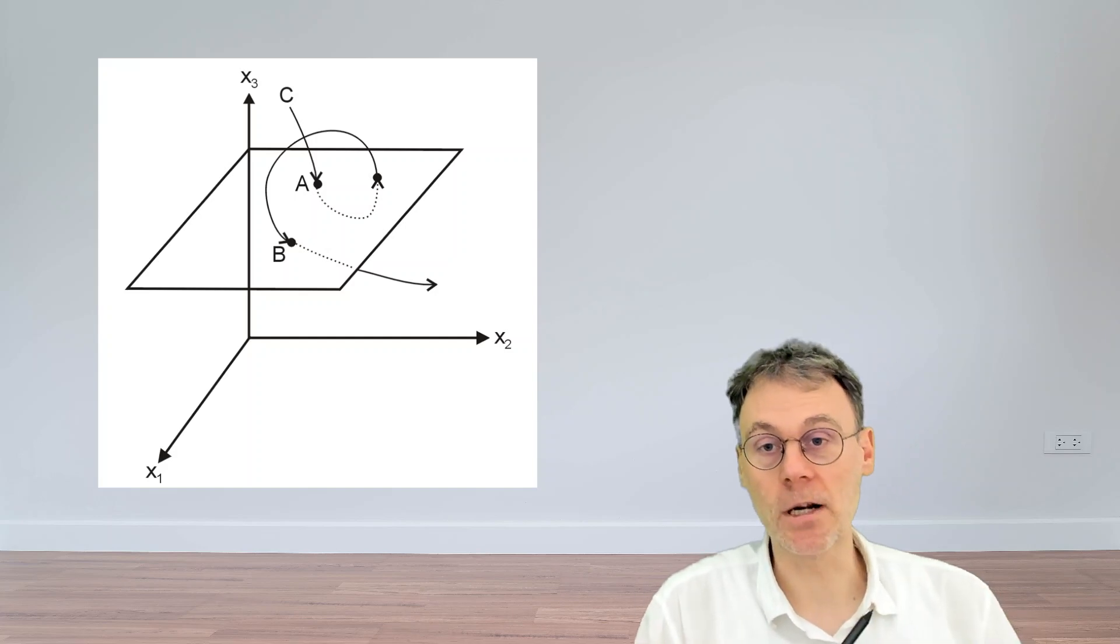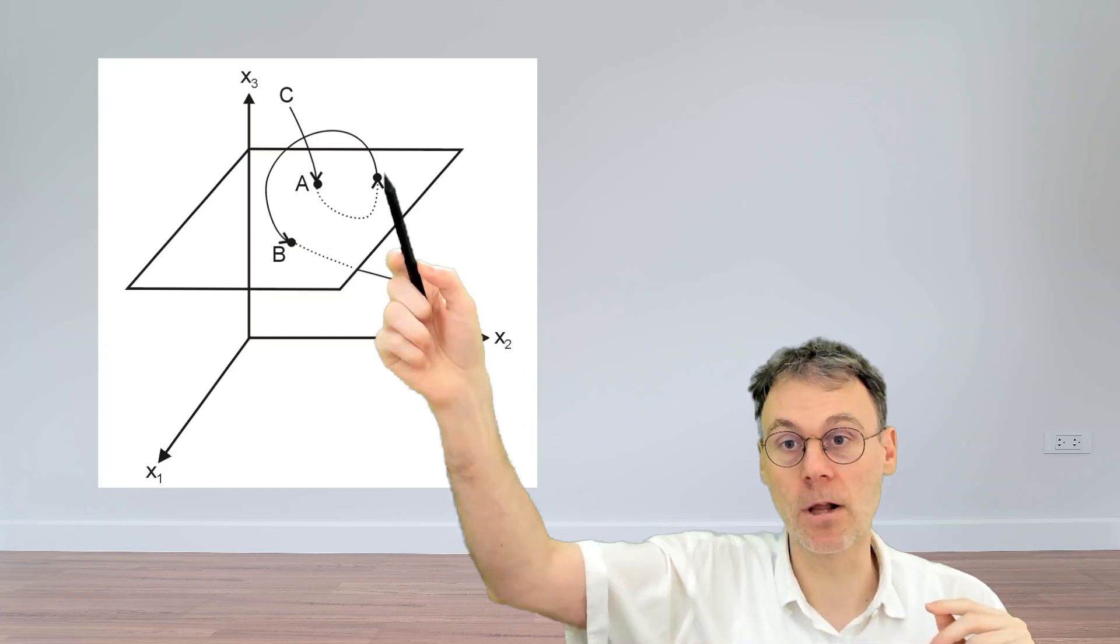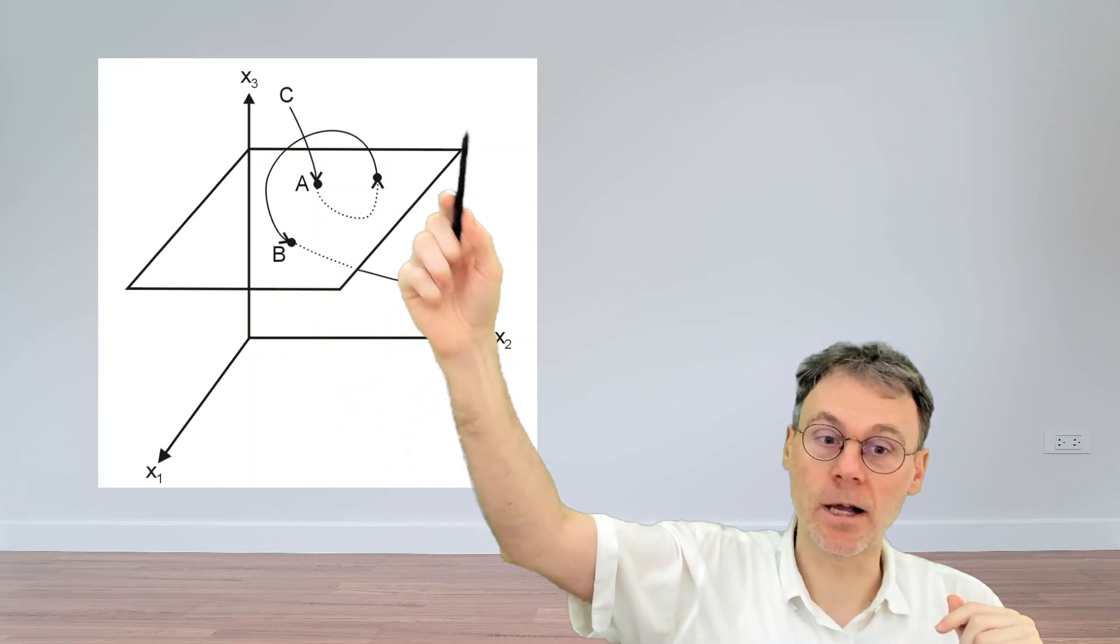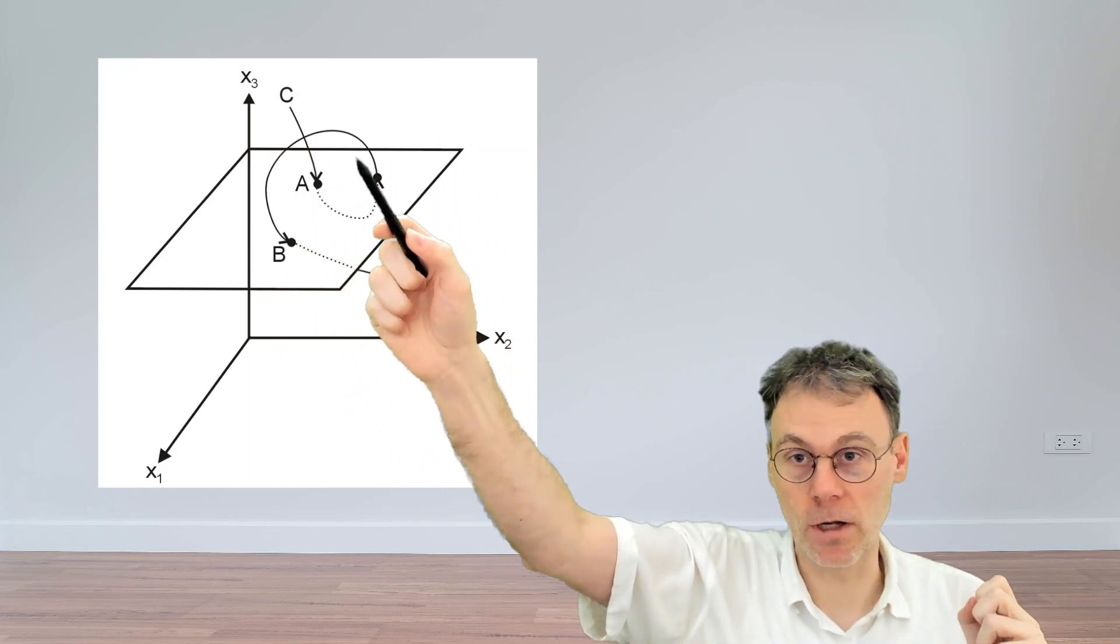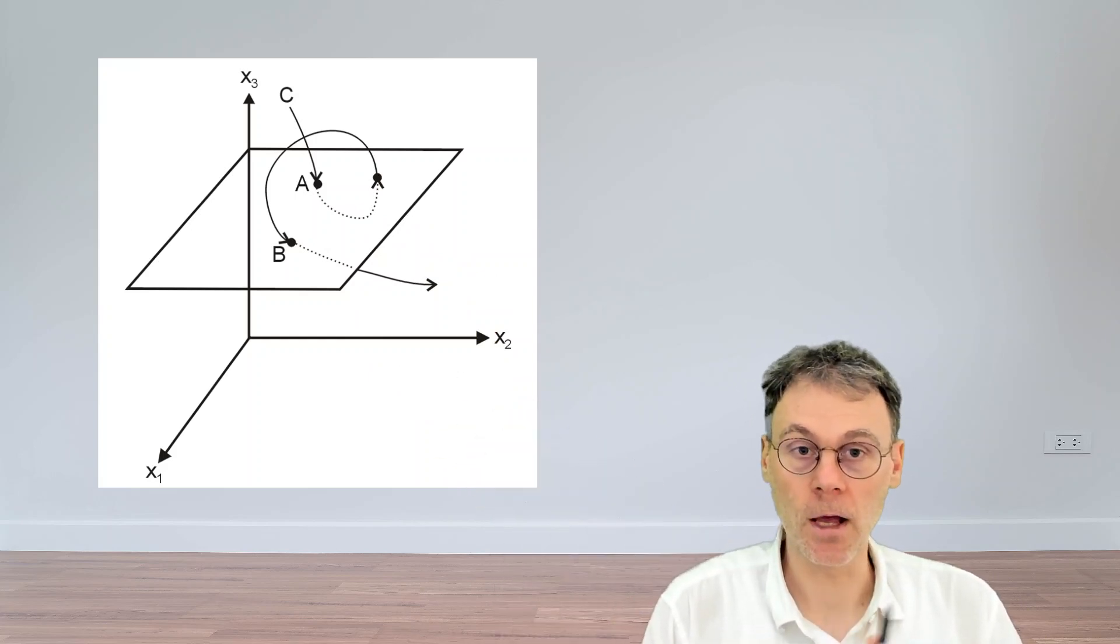And you see indeed that there will be a clear link between the dynamics of the continuous time system and those of the discrete time system. Because if you have, for example, a closed loop, which is being described by your trajectory, this will get translated into hitting the same points over and over again when you pierce this reference plane here.